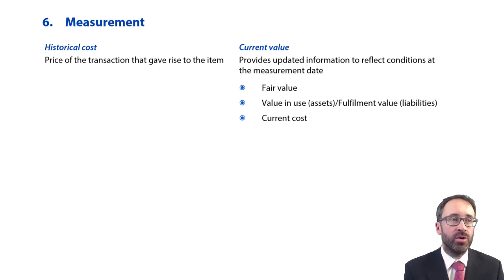So what have we got? Well, the first one is historical cost. That's basically looking at what you paid to initially buy the asset, or the initial amounts that you owe when it comes to settling the liability.